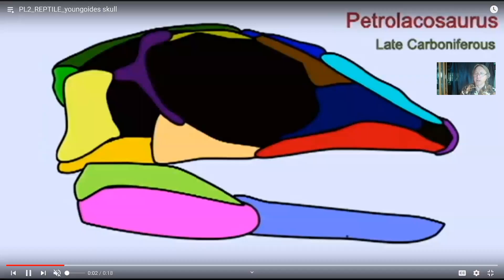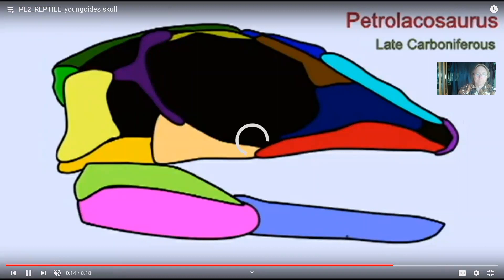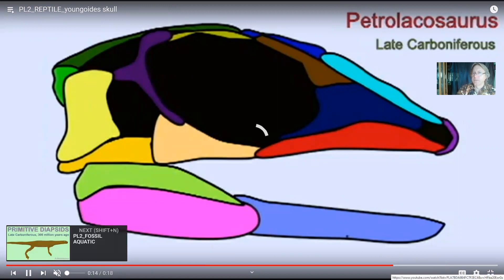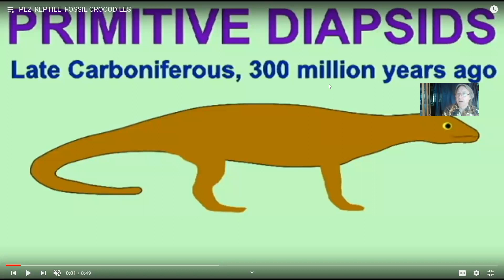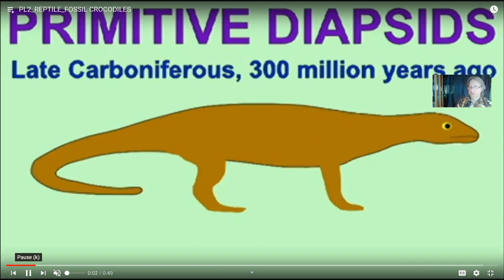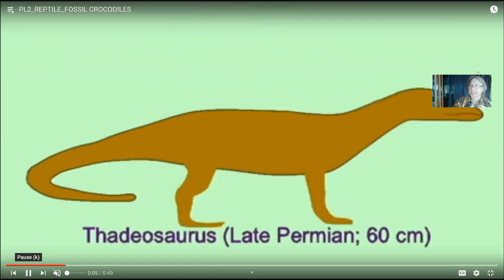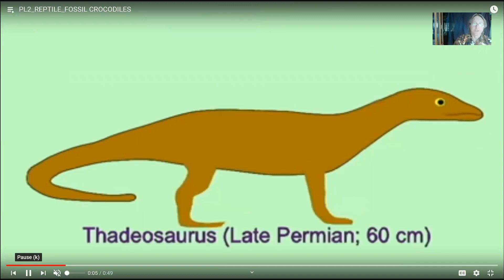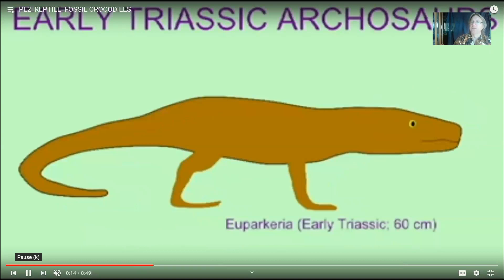The Triassic period, after the end-Permian extinction but before the end-Triassic extinction when Pangaea started to break up and the Atlantic Ocean began to form, saw many archosaur groups evolve. Although groups like the aetosaurs, phytosaurs, and Rauisuchians did not survive the end-Triassic extinction, some did — the dinosaurs, which would lead to birds, and the crocodiles.